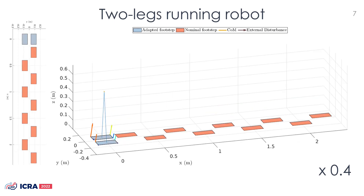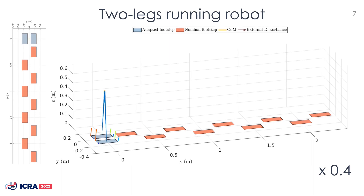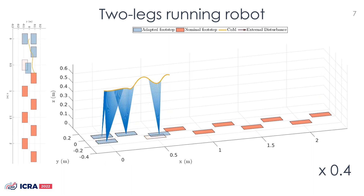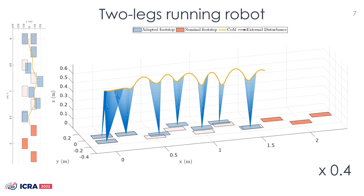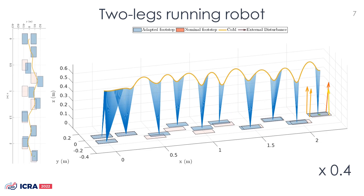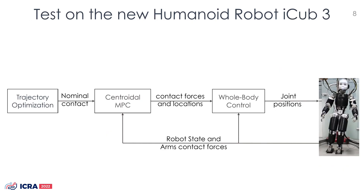We also tested the controller in the case of a two-legs floating base system. The planned contact sequence switches from a bipedal locomotion pattern to a running pattern. Furthermore, an external force acts on the robot's central mass. The MPC handles the transition from locomotion to running while dealing with this external disturbance effect.